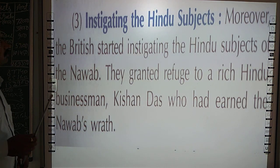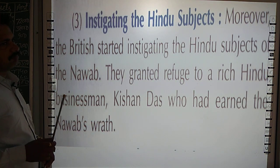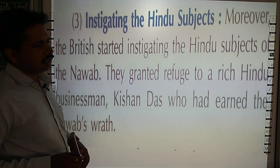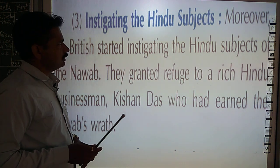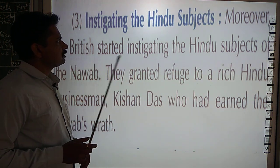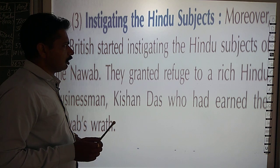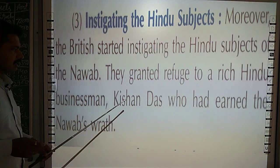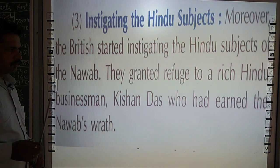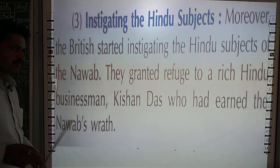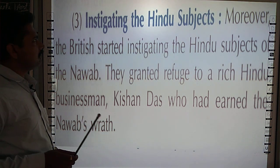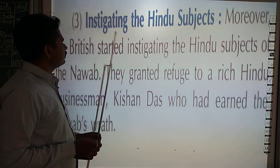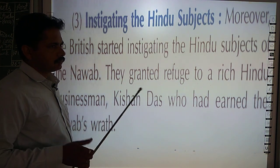Third, that is instigating the Hindu subjects. The East India Company, under their policy of divide and rule, started instigating the Hindu tenants of the Nawab. Various rich Hindu businessmen like Kisan Das, who earned the Nawab's trust, stood against the Nawab due to the instigation of the Englishmen.